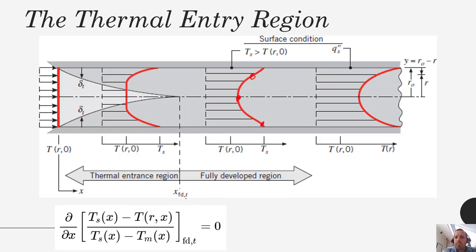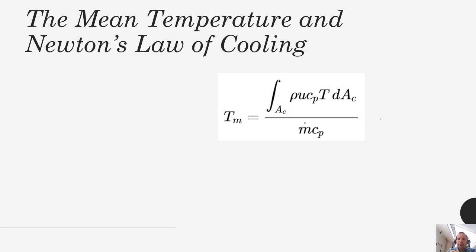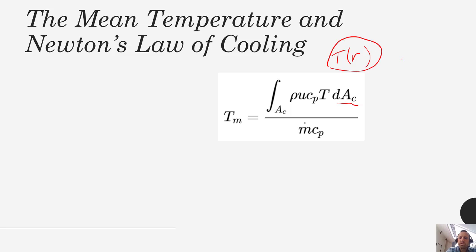What you should commit to memory is that you're going to be dealing with a mean temperature. While there is a temperature profile across the cross-section, we'll basically be doing all of our relationships as if the fluid were all at a mean fluid temperature. If you knew the actual temperature profile with respect to r, you would obtain T_mean by integrating over the entire cross-sectional area at a particular X, dividing by m-dot times c_p. In this class you probably will never have to actually do this integration — we'll just be using the mean temperature as a function of X.